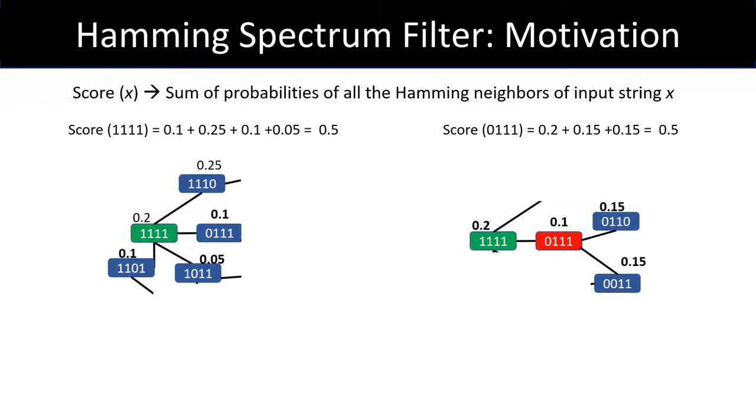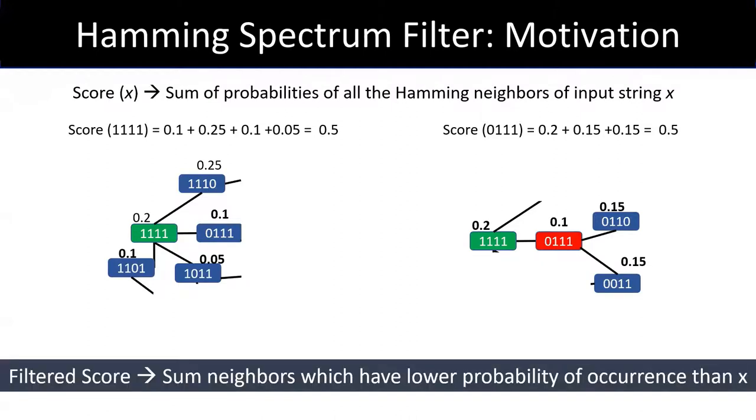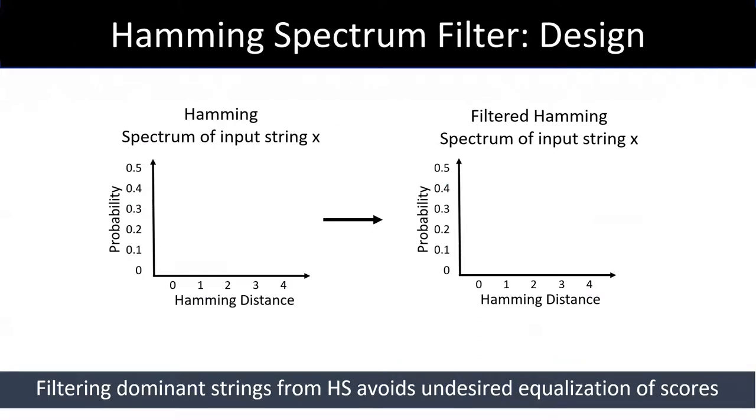To solve this problem, we modify the definition of score. Instead of summing all hamming neighbors, we sum probability of neighbors which have lower probability of occurrence than the input string. And using this filtered score, we can better capture the desired structure. We can implement this filter by simply removing all outcomes that are greater than input string from the hamming spectrum.